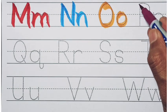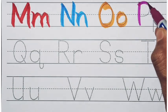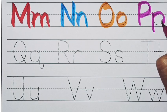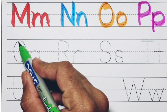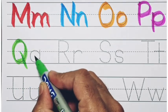Pink color. P, P, P for peacock. Green color. Q, Q, Q for queen.